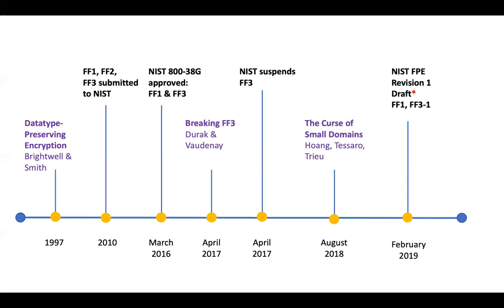There's been a bit of history with format-preserving encryption — it was a bit of a bumpy road. In the timeline, black text shows what NIST was doing and purple text shows what the academic community was doing. It started with Brightwell and Smith's first paper in 1997. Around 2010, NIST asked for submissions for a format-preserving encryption standard and received three, which they renamed FF1, FF2, and FF3. After analyzing those and getting public comments, about six years later in 2016 they published NIST Special Publication 800-38G. It did not approve FF2, but it did approve FF1 and FF3.